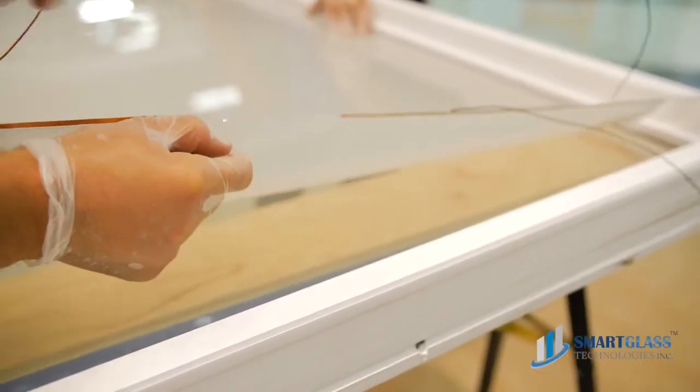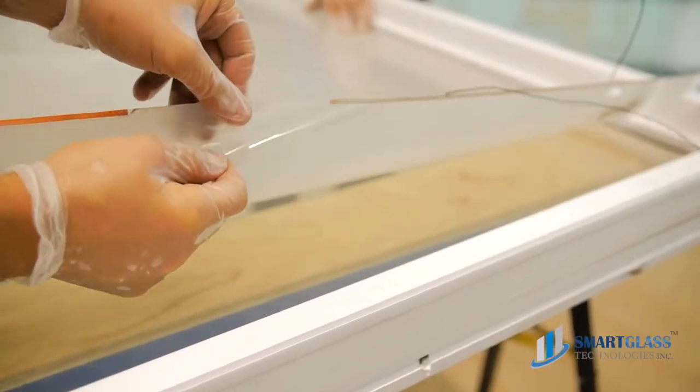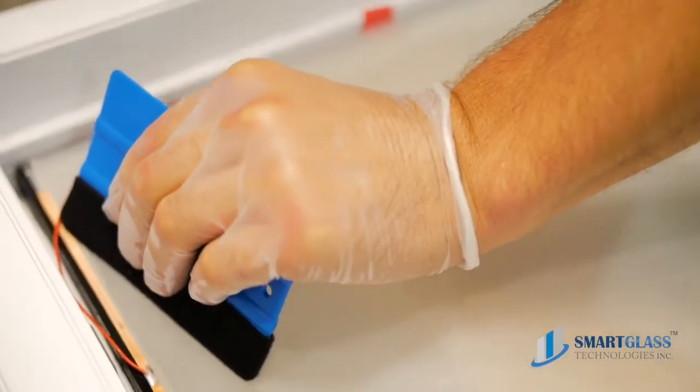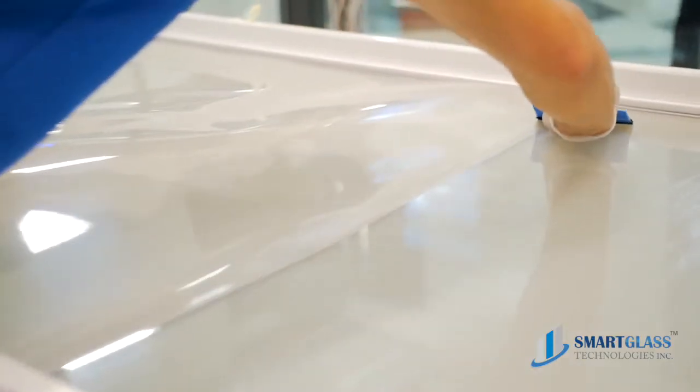Take off 20-30mm of the protective layer from the sticky side of the film. Align to the top of the glass and apply the film onto the glass surface. Secure the initial alignment.